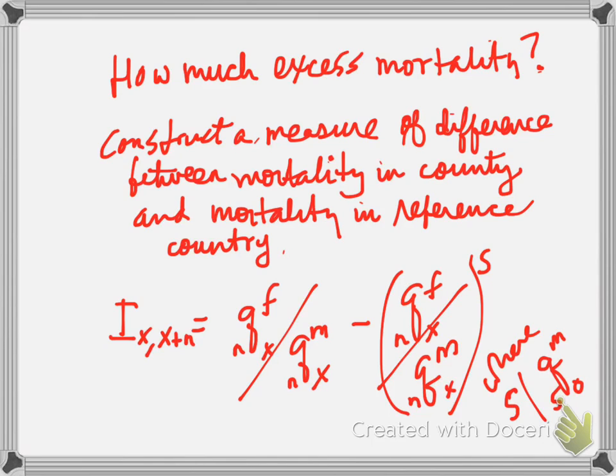Hill and Upchurch, back in 1995, constructed one such measure of the difference between mortality in a country and mortality in a reference country, or reference set of countries, that had similar overall mortality to the country one might be examining, but known to be relatively little discriminatory against females, against the girl child. What they did was they constructed this index, that's basically the difference between the mortality ratios of females to males between any two ages.